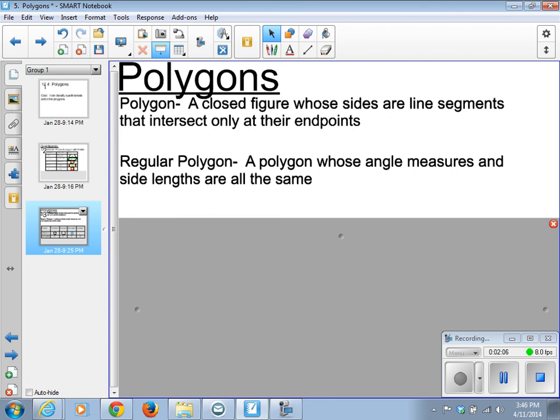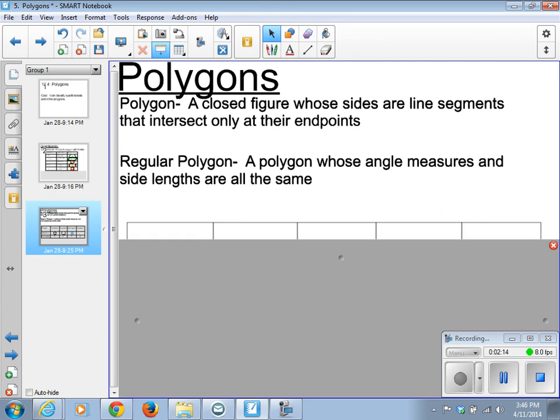A regular polygon. This is a polygon whose angle measures and side lengths are all the same. A good example of this would be a square.